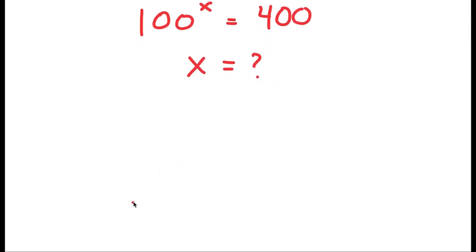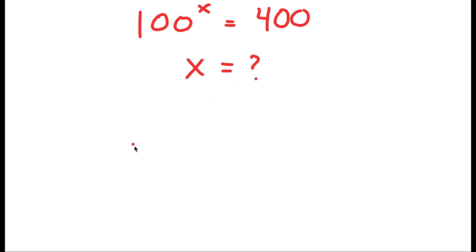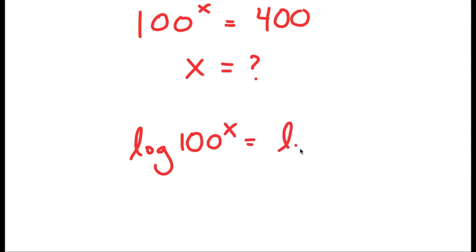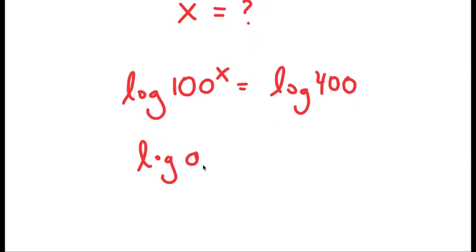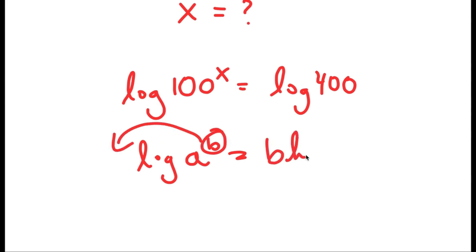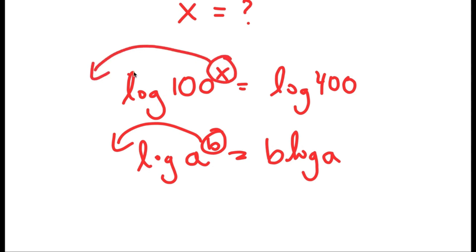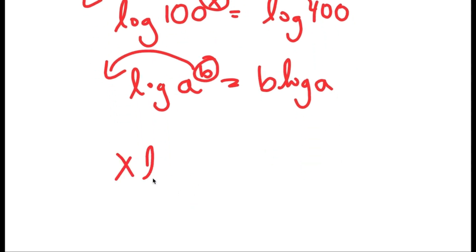To solve this, I'm going to be using logarithms. I'll first start by taking the log on both sides, so I get log 100 to the power of x is equal to log 400. If I have something in the form log a to the power of b, I can move x to the front to get b times log a. So I get x times log 100 is equal to log 400.